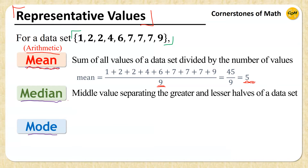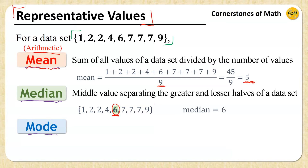Next, the median is the middle value separating the greater half from the lesser half of a data set. For our example of 9 values, if we arrange them in increasing order, you can easily notice that 6 is right in the middle, hence the median is 6.